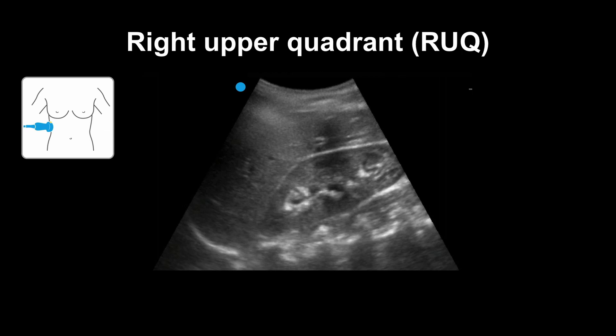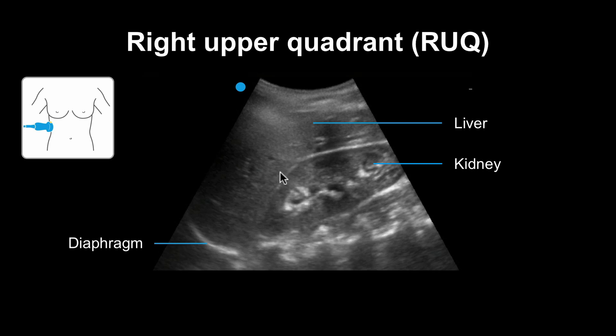The probe is pointing up towards the head, so the left side of the image is what is closest to the head, while the right side of the image is closest to the patient's feet. You can see the liver, kidney, and diaphragm. Train your eye to look carefully at the interface between the liver and the kidney — right here.